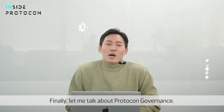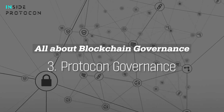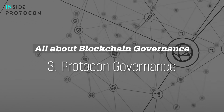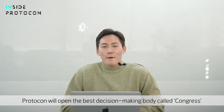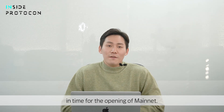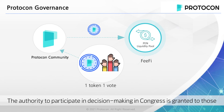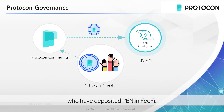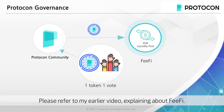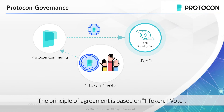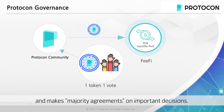So finally, let me talk about the Protocon governance. Protocon will open the best decision-making body called Congress in time for the opening of the mainnet. The authority to participate in decision-making in Congress is granted to those who have deposited PEN in FIBA. The principle of agreement is based on one token, one vote. We have adopted a structure that benchmarks Tezos and makes supermajority agreements on important decisions.